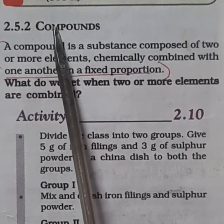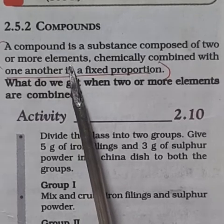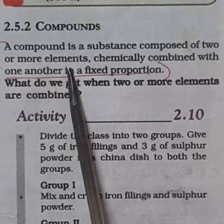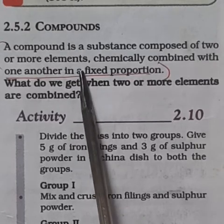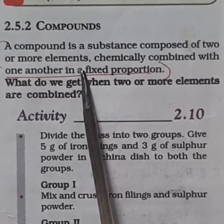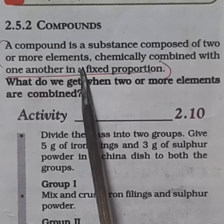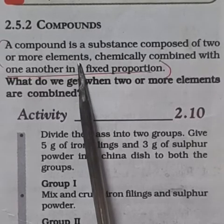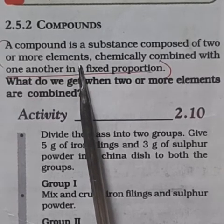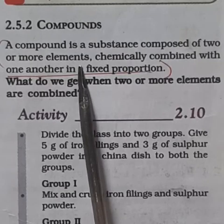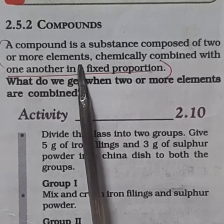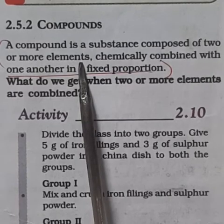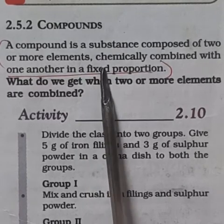Elements combine chemically with one another in a definite proportion to form the compounds. The composition of each new substance is always fixed. The new substance formed will have different properties. The constituents of compounds can be separated by chemical reactions.